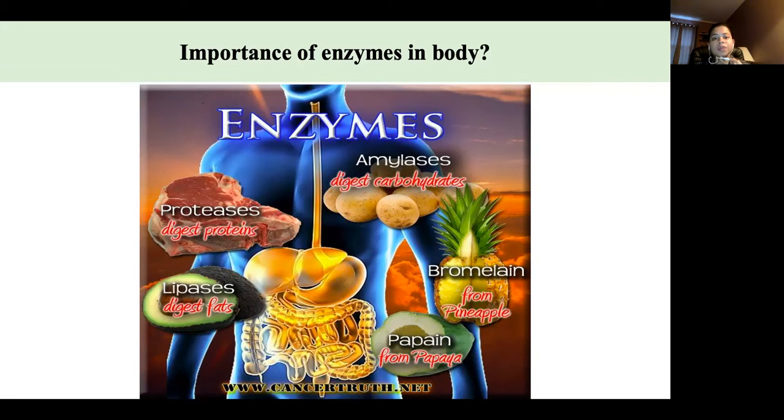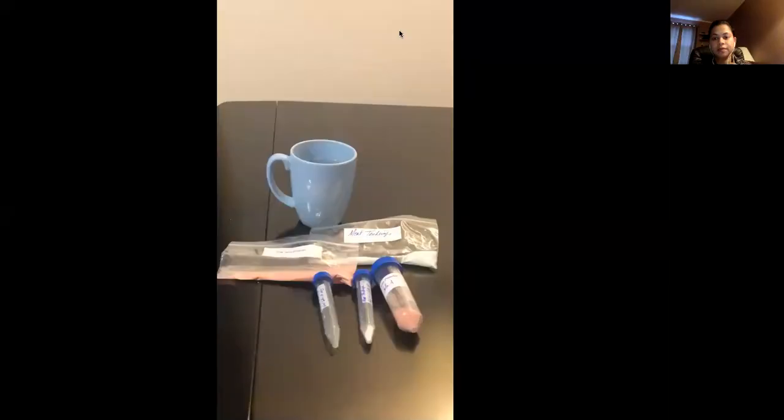For session two, let us see how bromelain and papain, the protein digesting enzymes, perform or function. Here we have this video that is going to demonstrate how you need to go ahead with the enzyme experiment. According to the protocol sheet that you already have been given, let us first see what items you need for this experiment.